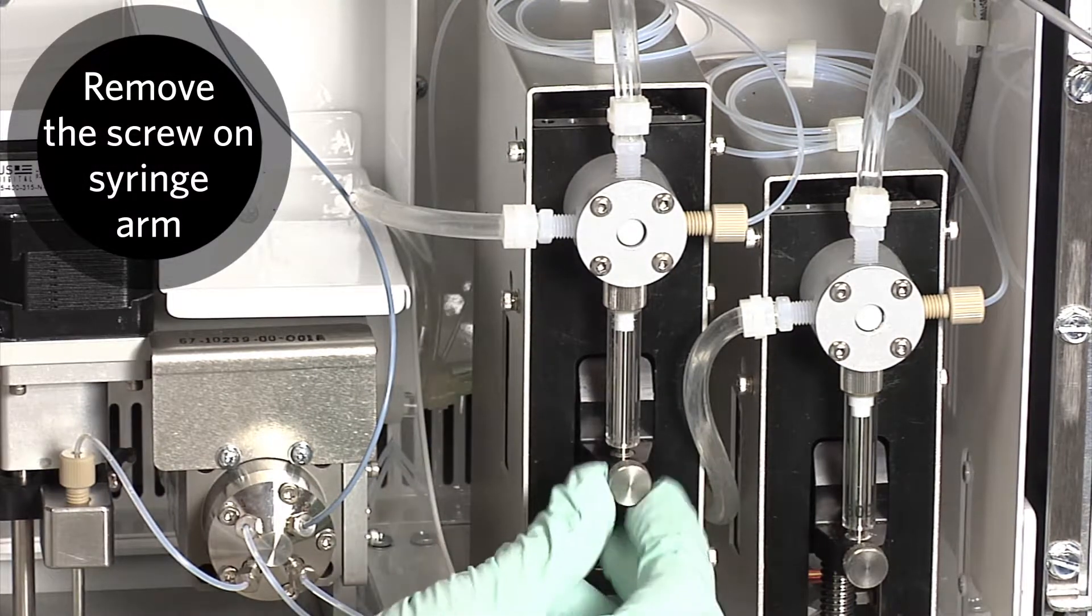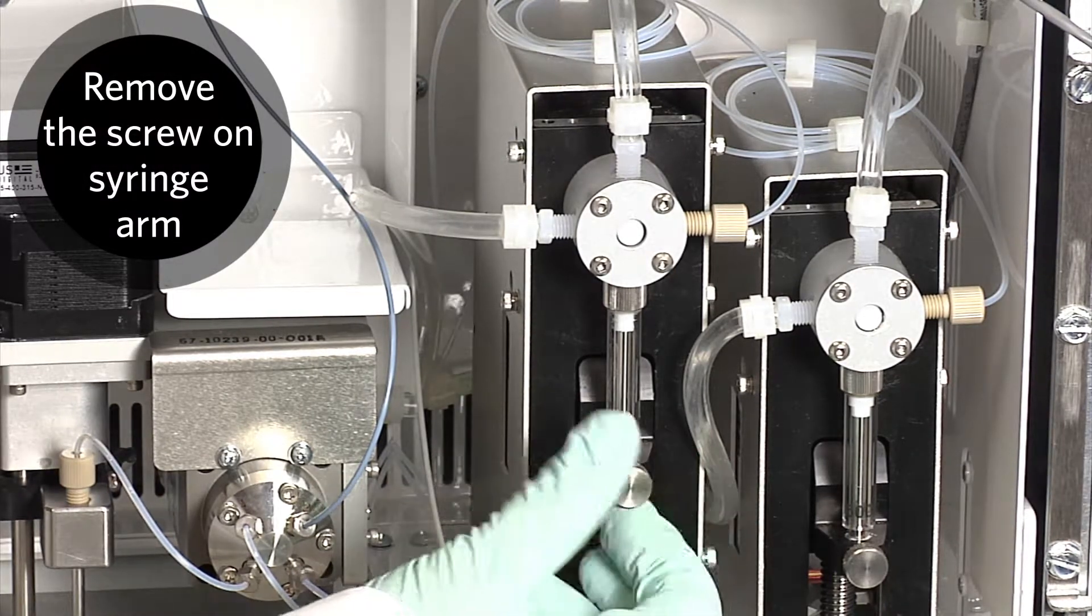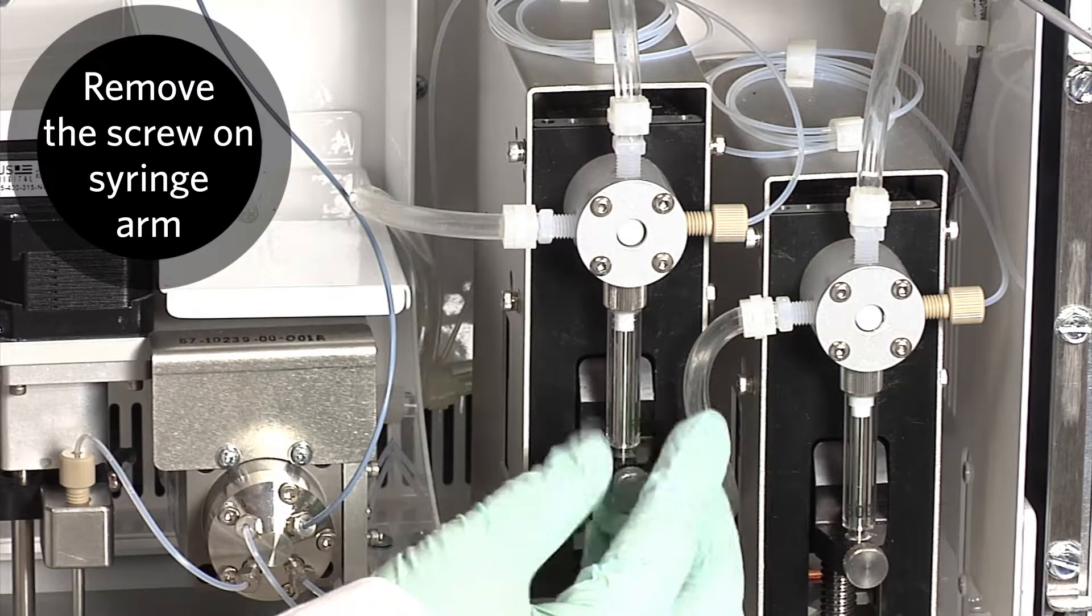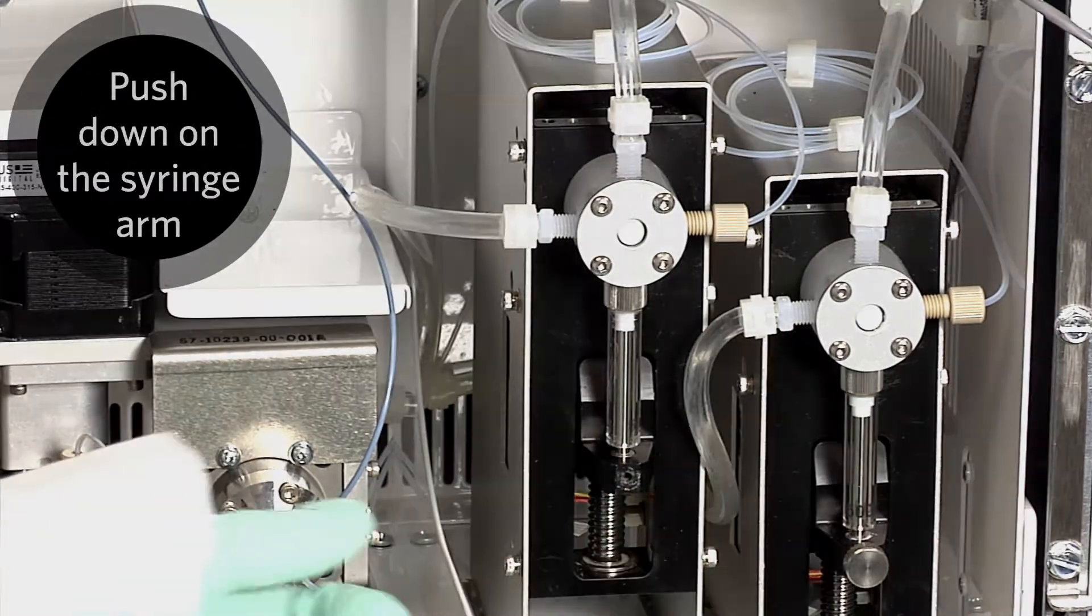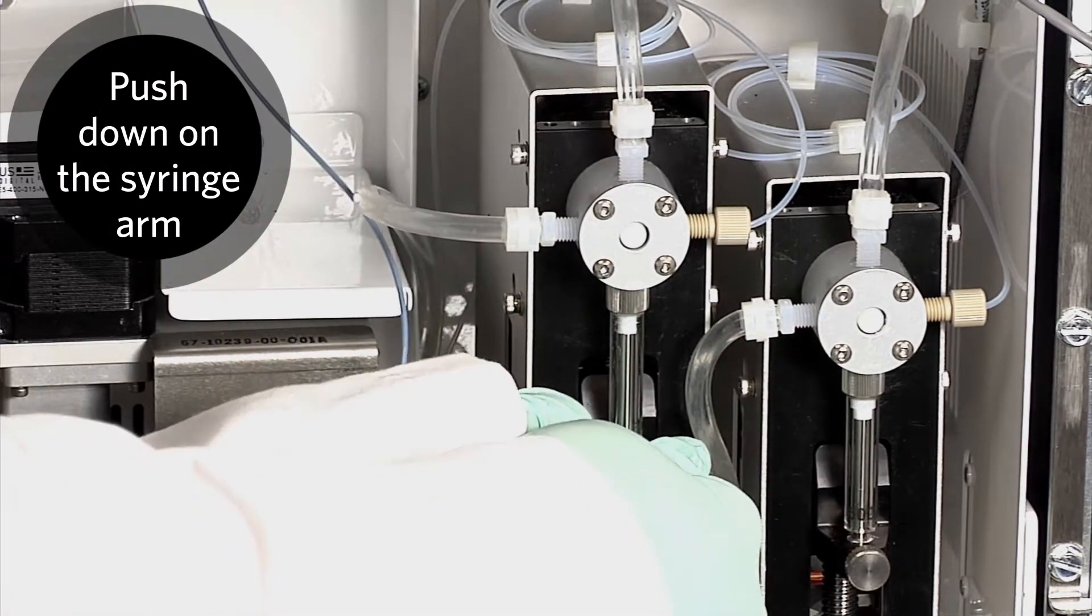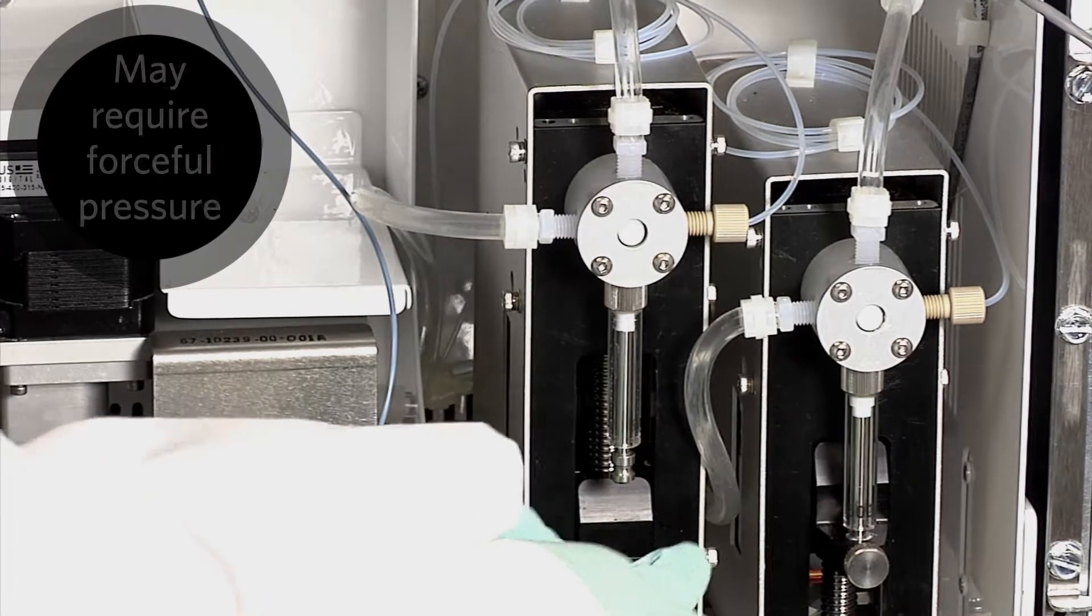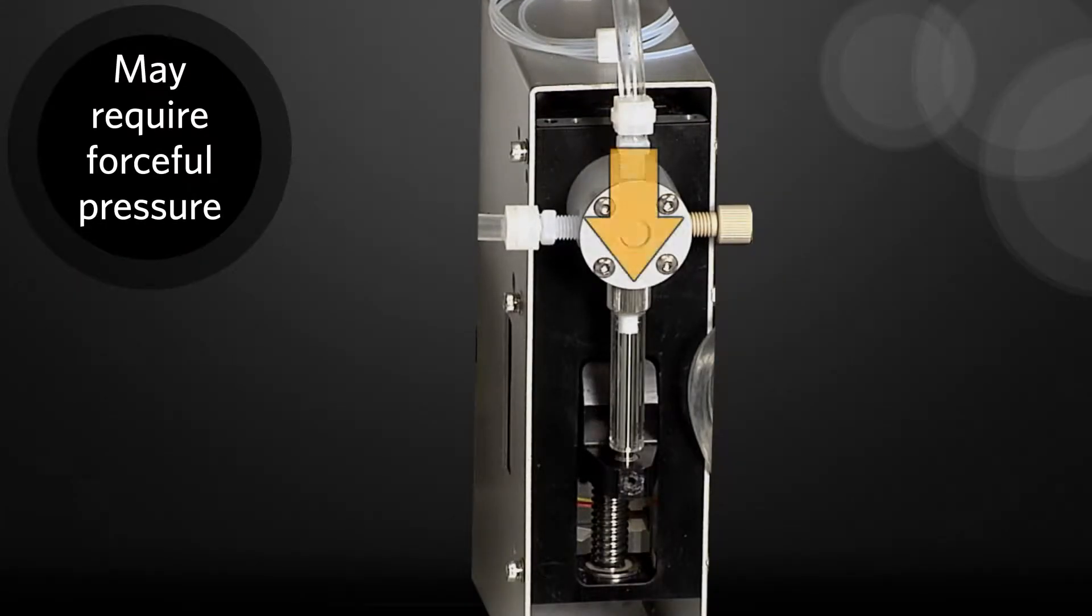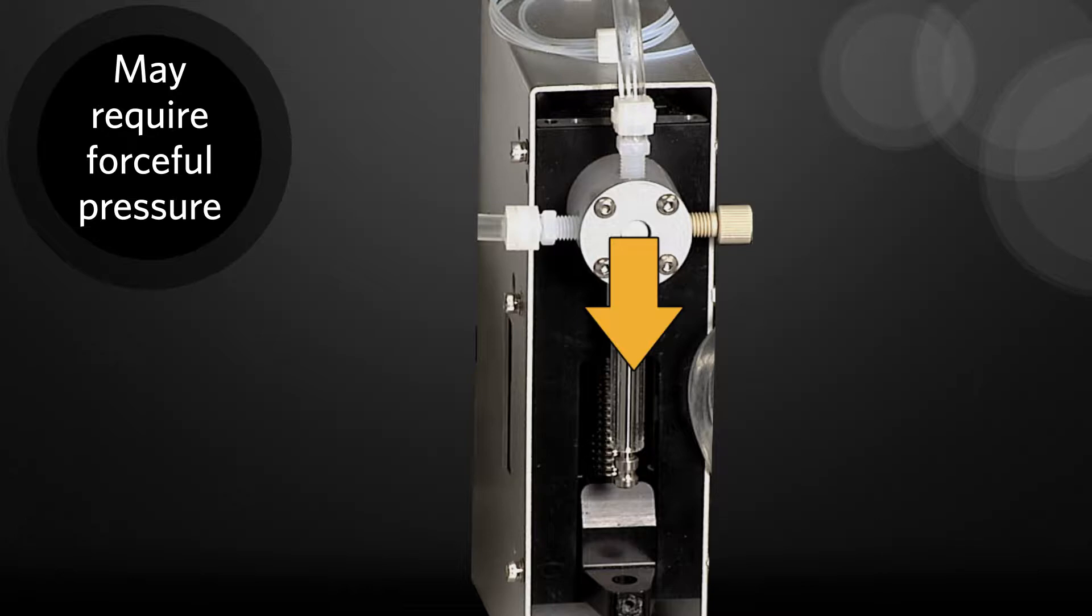Remove the screw on the syringe arm at the bottom of the syringe and push down on the syringe arm. Please note, the syringe arm can be difficult to move and may require forceful pressure to get it to disengage.